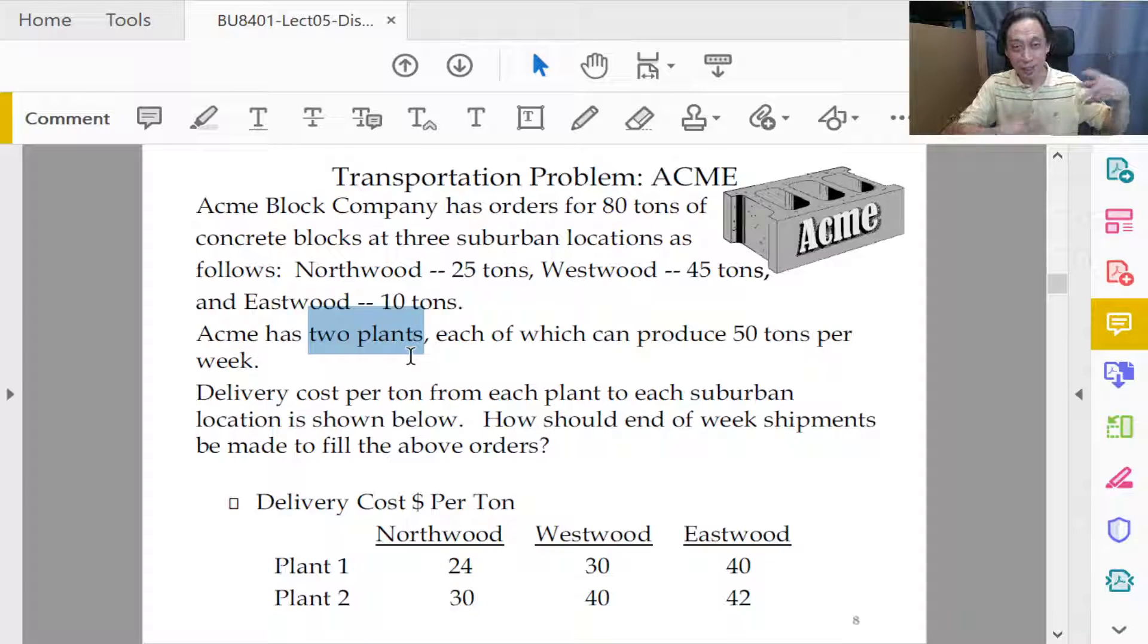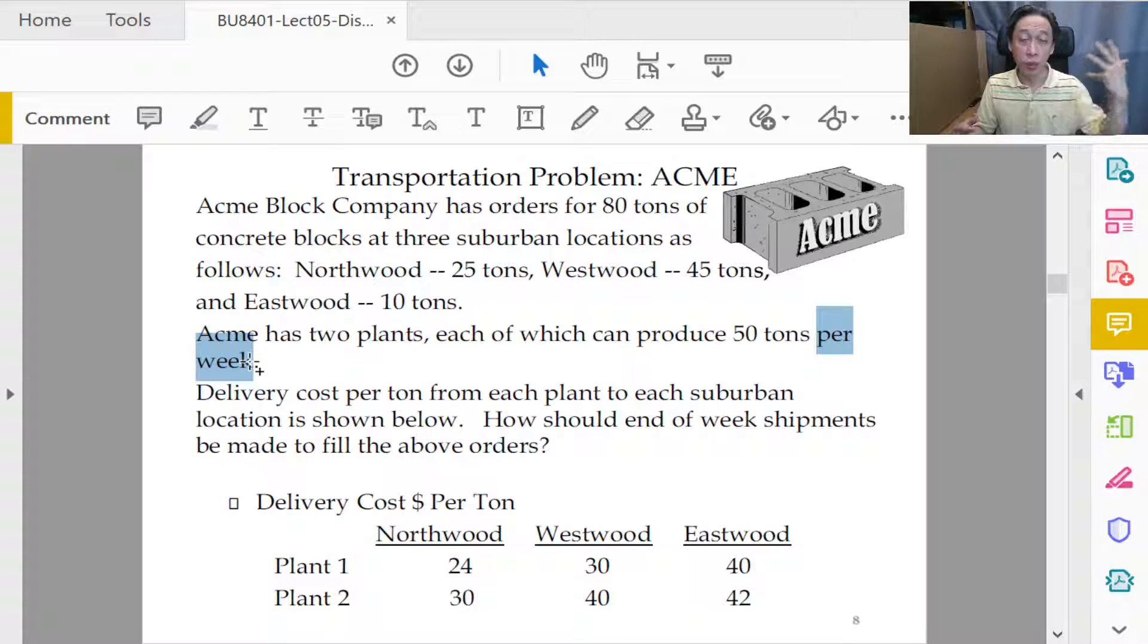Suppose if the two plants, the factories producing the good, the concrete blocks are to be the two sources on the left. Each of which can produce 50 tons per week. Notice the time period per week and we said that earlier on in our previous discussion that for the transportation template to be applied we need a bounded time to talk about the capacity.